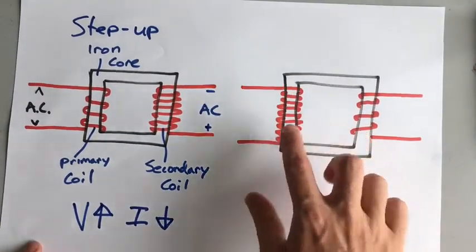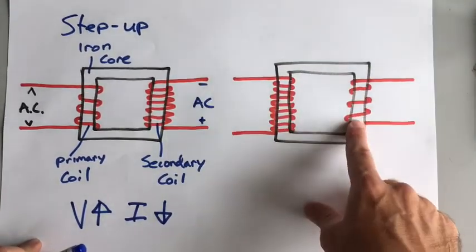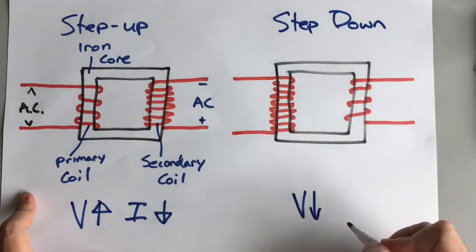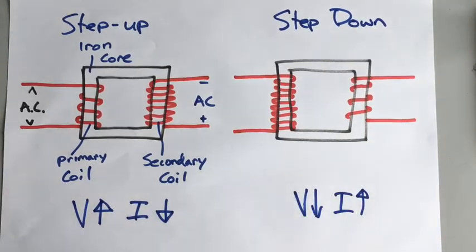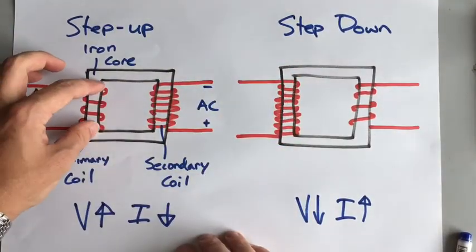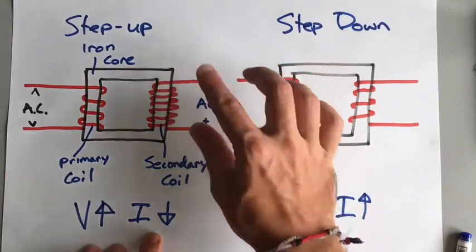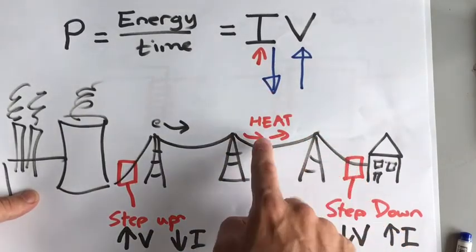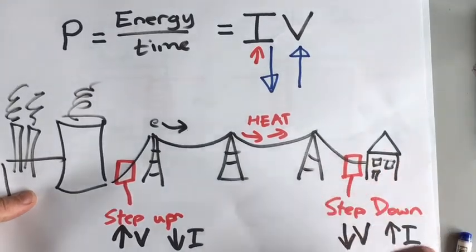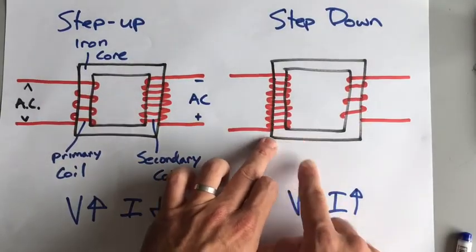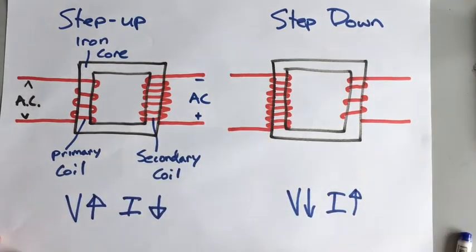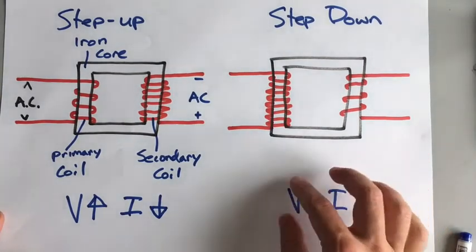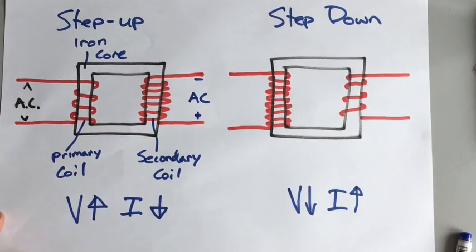In this one it's the opposite — it goes from lots of turns to not very many turns, so this one is a step-down transformer, which means the voltage is decreasing and the current is increasing. The current from the power station flows through the step-up transformer, increasing the voltage and decreasing the current, so we can transfer that electricity all the way with a low current without losing too much energy through heat. Then when it gets to our house, it runs through a step-down transformer, which brings the voltage back down and the current back up, making it more useful. When we've got a very high voltage and very low current it's not very useful in our homes, so we need to balance it back out, which is what the step-down transformer does.